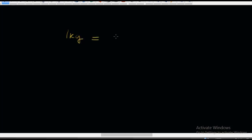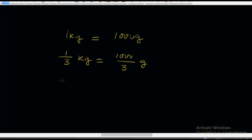What if we divide by three? One kilogram is equal to 1000 grams, so one over three kg is equal to 1000 over three grams. If you divide 1000 by three, you get 333.3 grams. So one-third of a kilogram is equal to 333.3 grams.